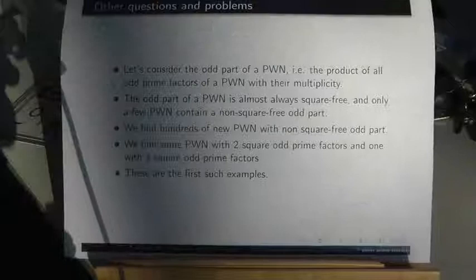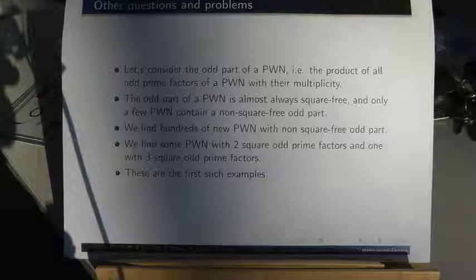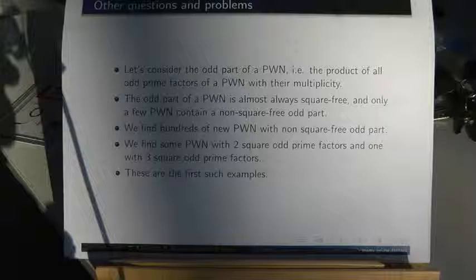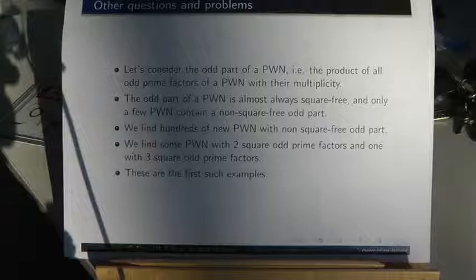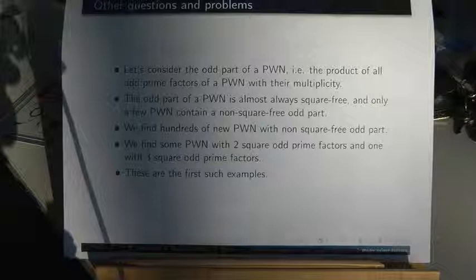Now let's consider the odd part of a primitive weird number, the product of odd prime factors of a primitive weird number with their multiplicity. The odd part of a primitive weird number is almost always square-free, and only a few primitive weird numbers contain a non-square-free odd part.